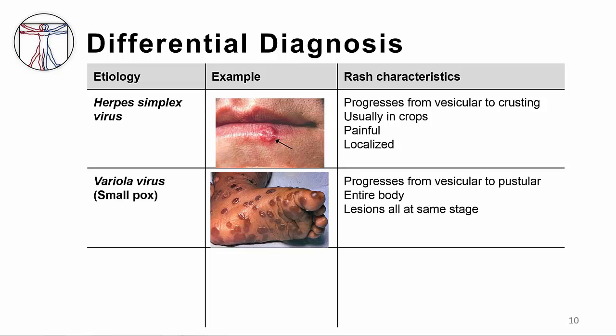Variola virus, or smallpox, also looks like VZV, but the lesions go from vesicular to pustular and occur on the entire body, and the rash is all at the same stage, which is a critical distinguishing feature. The fact that variola has been eradicated would also put this lower on your differential diagnosis.